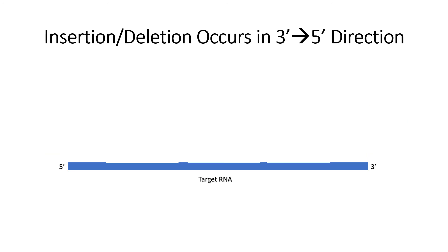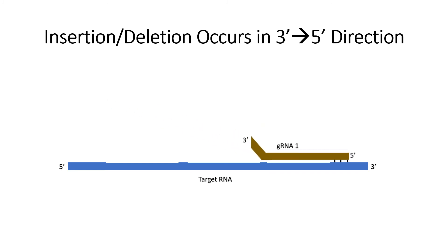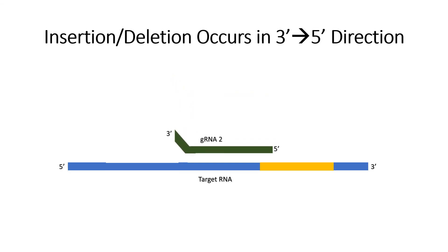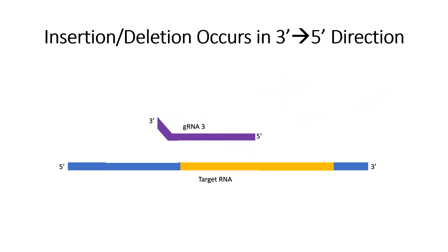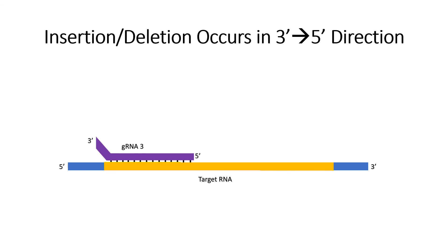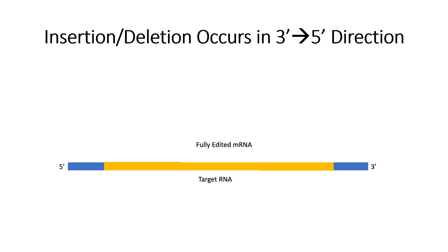Lastly, let's talk about the directionality of guide RNA editing, which always occurs in the three-prime to five-prime direction. The first guide RNA will come in and bind the three-prime end of its target RNA through its complementary five-prime end and dictate the changes to be made in the mismatched target RNA sequence. This editing allows the next guide RNA to bind to the RNA transcript at the end of the already edited site. Much like the first guide RNA, the second guide RNA will induce edits further upstream in the target mRNA, allowing the next guide RNA to bind, and so on. This continues until all of the target RNA is corrected, and at the end we will have a fully edited mRNA that will be ready to be translated into a protein. Thanks for watching!